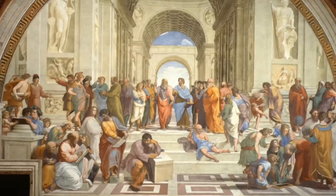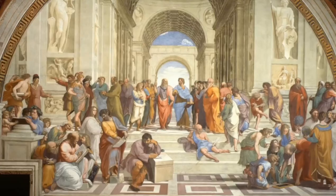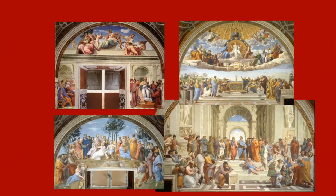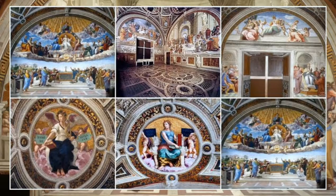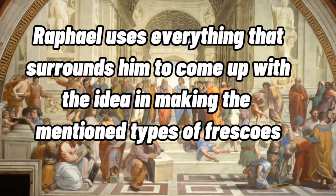Though it's a small room library compared to libraries nowadays, you can see a specific area which has its own painted frescoes in themes of laws, religion, poetry, and philosophy — which is actually the School of Athens. Each fresco represents an area where the book is being restored. Raphael uses everything that surrounds him to come up with the idea for making this dimensional type of fresco.